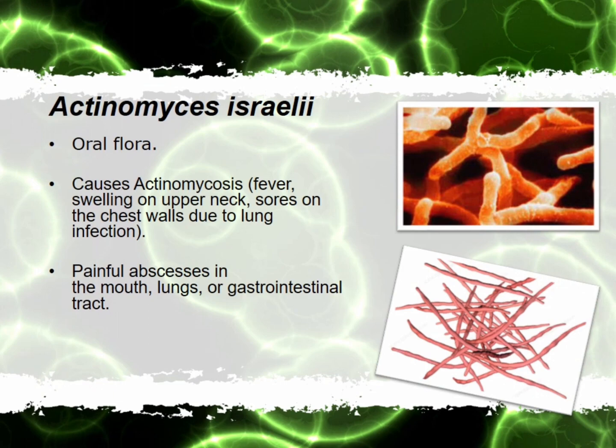The first one is Actinomyces israelii. We can find this bacteria in the oral cavity, which we sometimes call oral flora. This bacteria causes actinomycosis, which results in fever and some symptoms of lung infection. There are also painful abscesses internally. On the right we can see some rod-shaped structures, which is actually Actinomyces israelii.